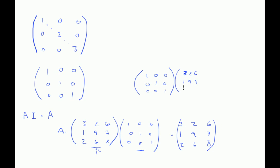Three two six, one nine seven, two six eight. Again, this row by this column gives us three, this row by this column gives us two, this row by this column gives us six.